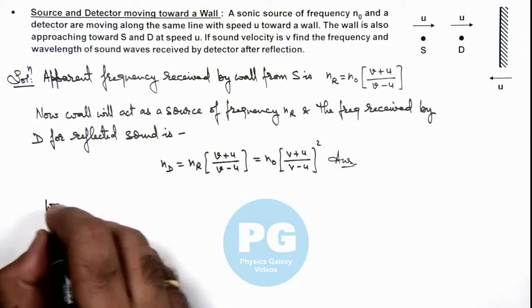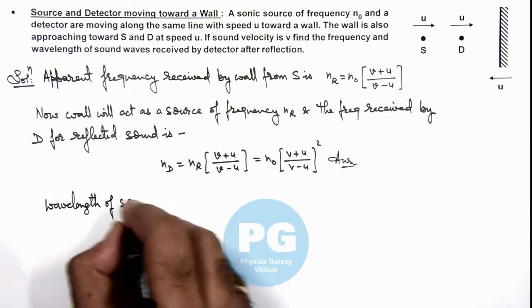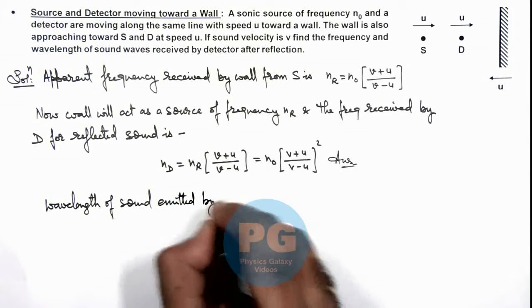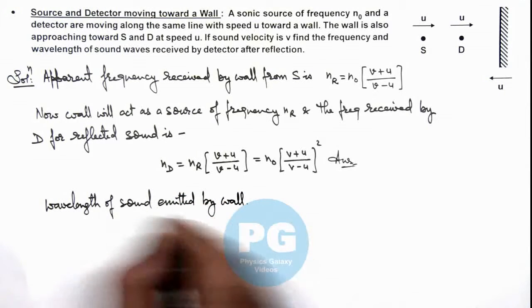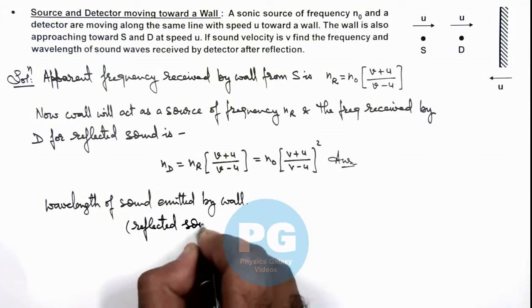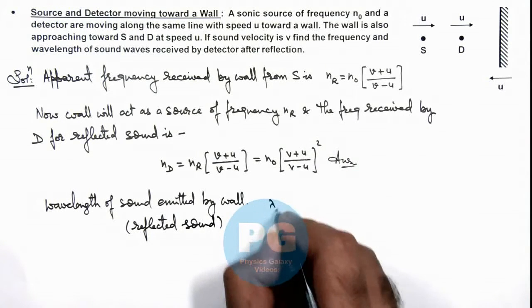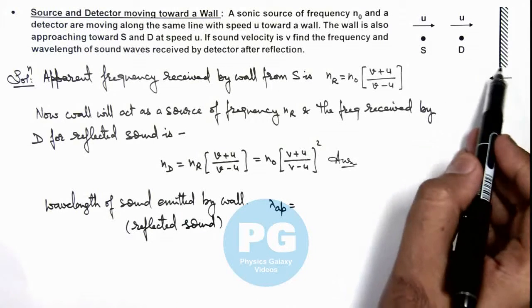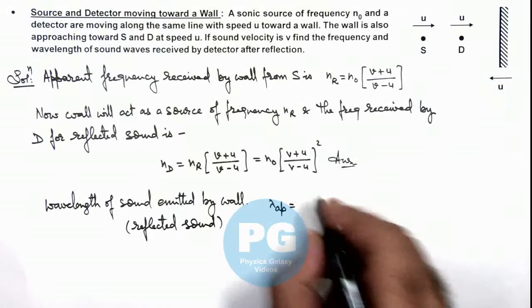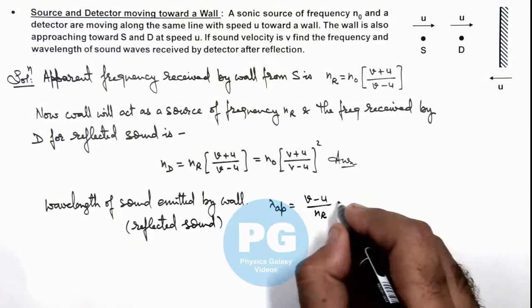So we can write wavelength of sound emitted by wall, which can be written as the reflected sound. Which we are assuming the wall is emitting, then this λ apparent can be written as: as it is moving with a speed u and sound velocity is v, then it can be written as (v - u) divided by nᵣ. So if we substitute the value, this will be (v - u) whole square.